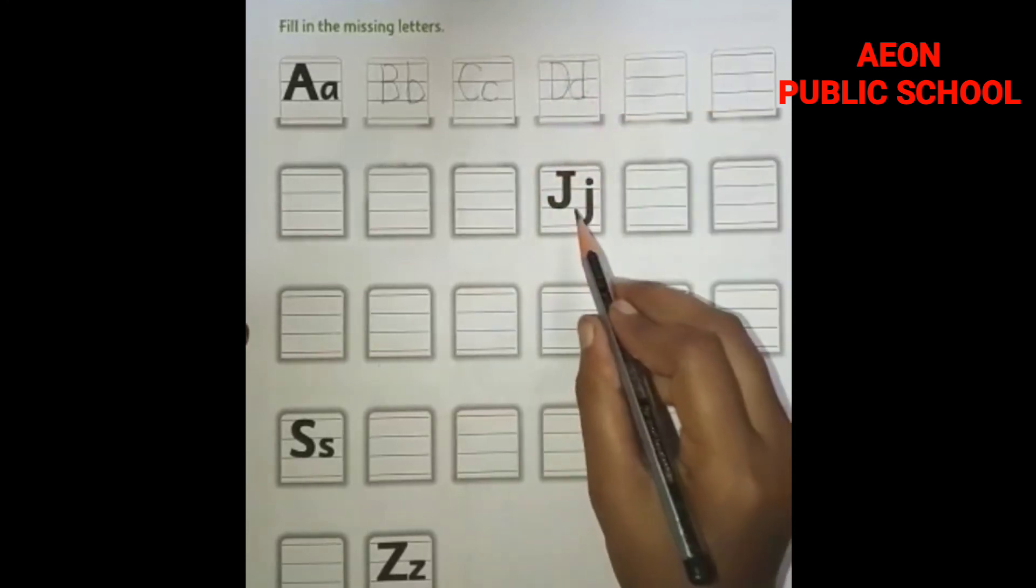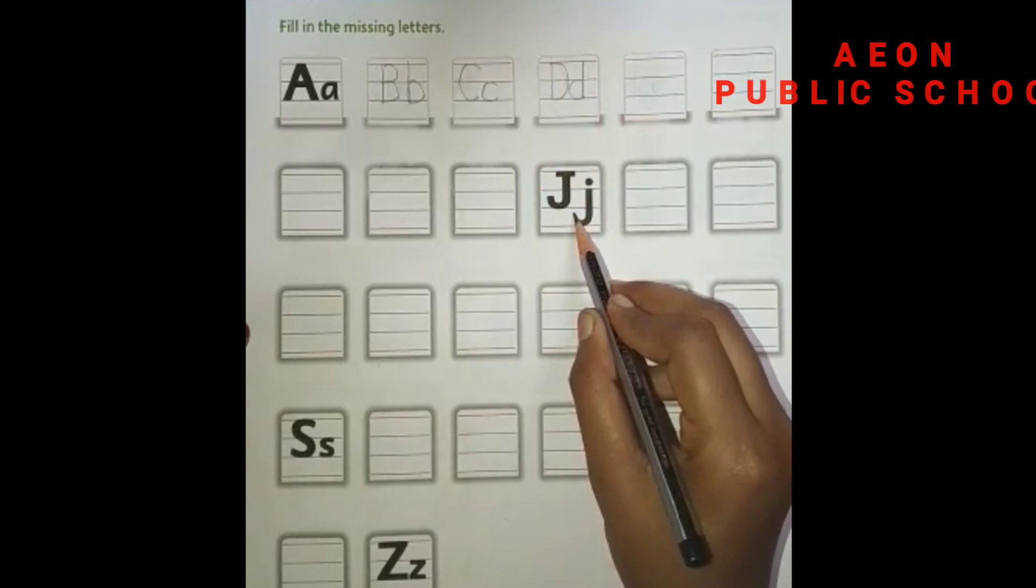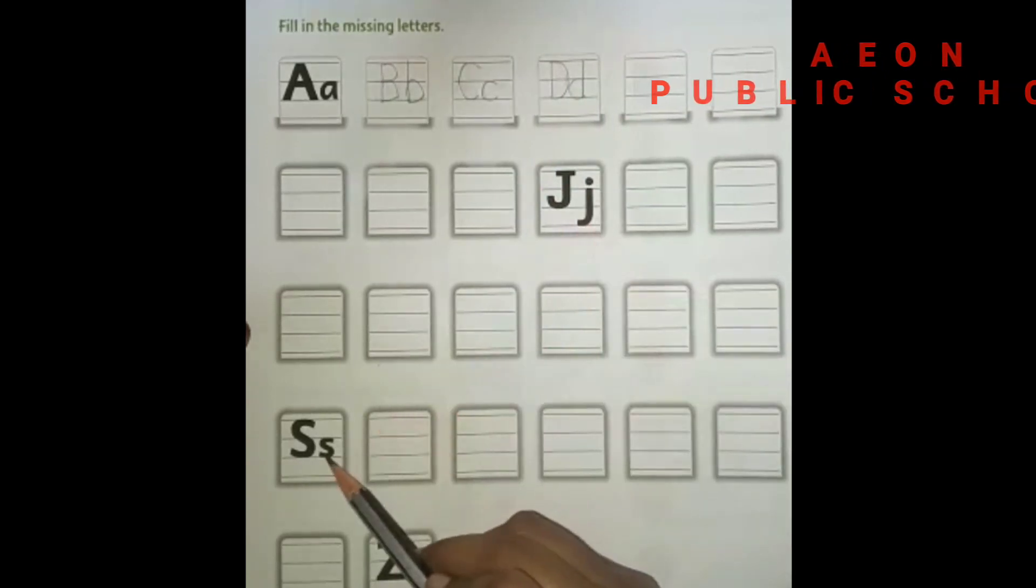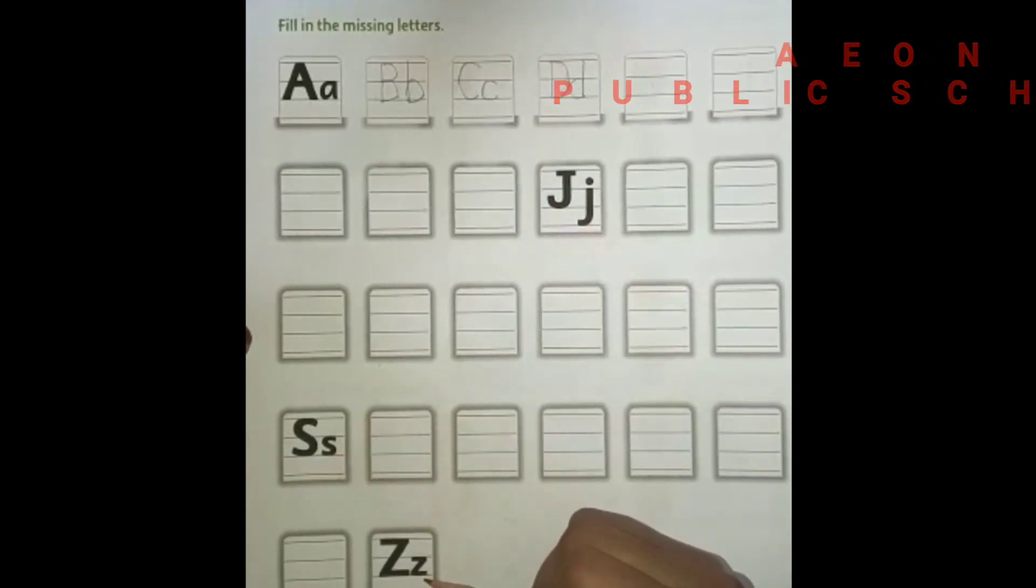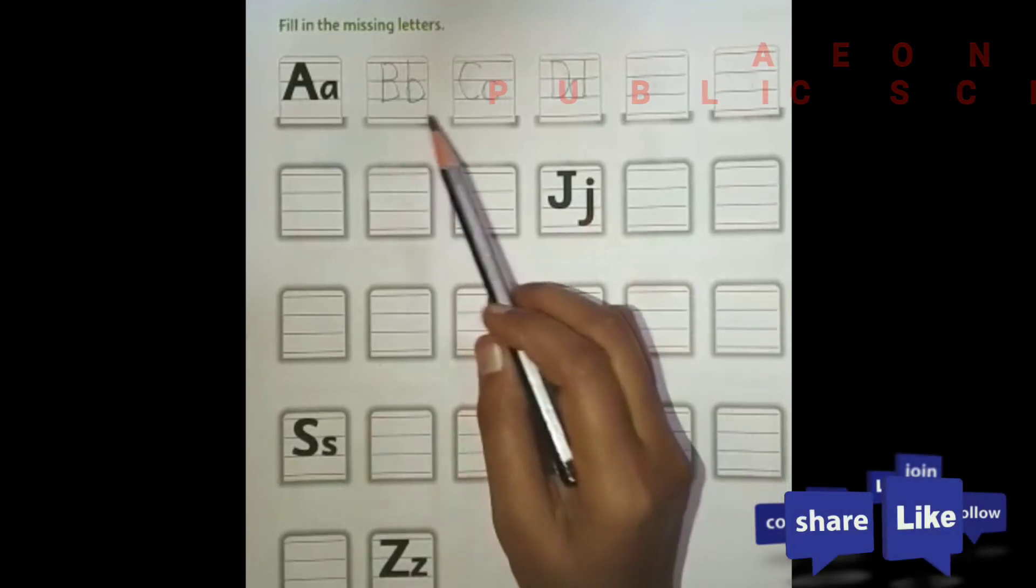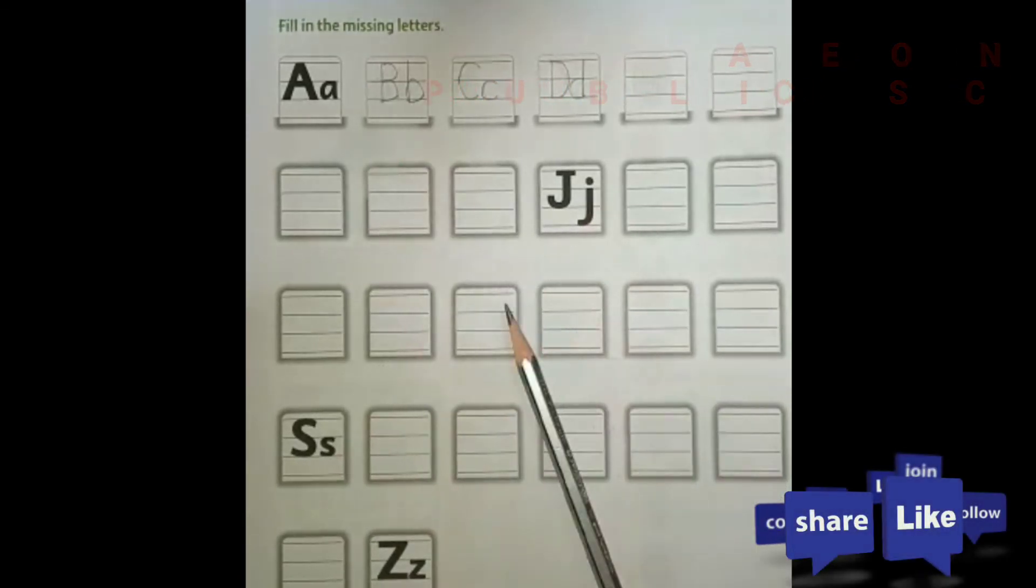You have given J over here. What is after J? You know all of you. After S. And the last one is Z. So write in capital and small form both. I hope you have understood. Thank you.